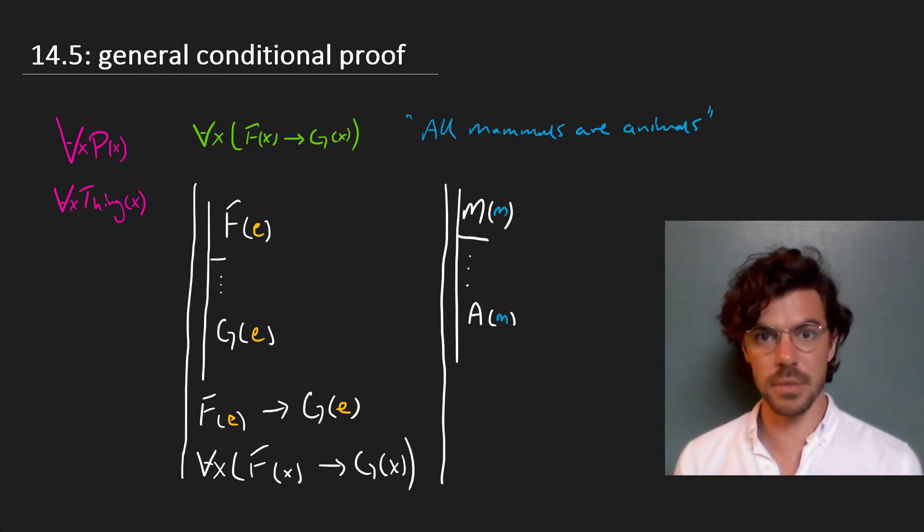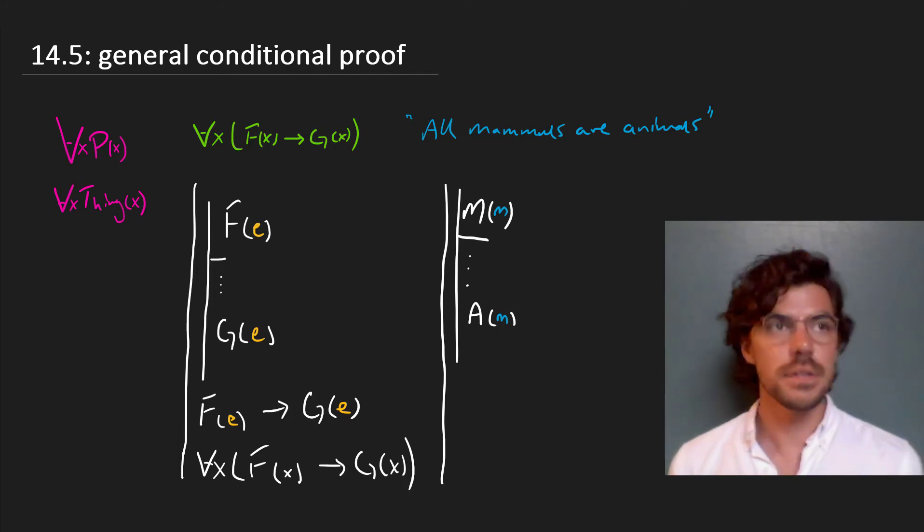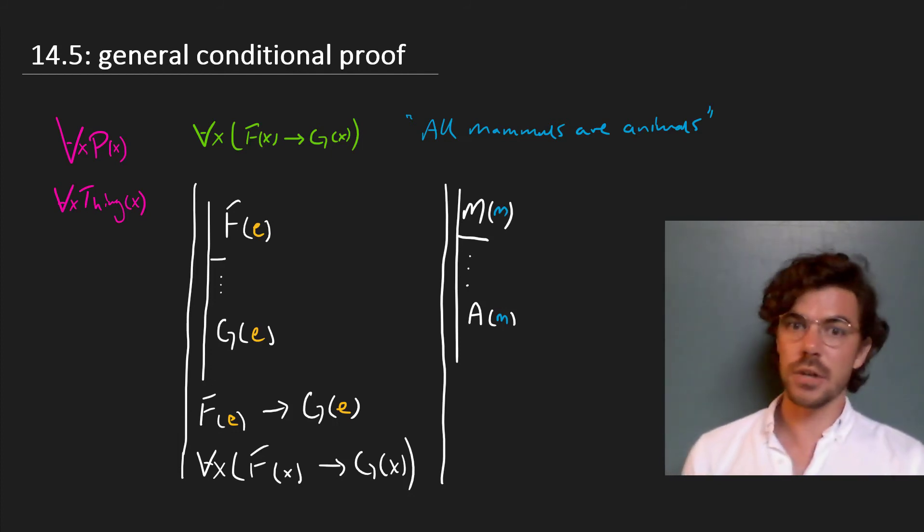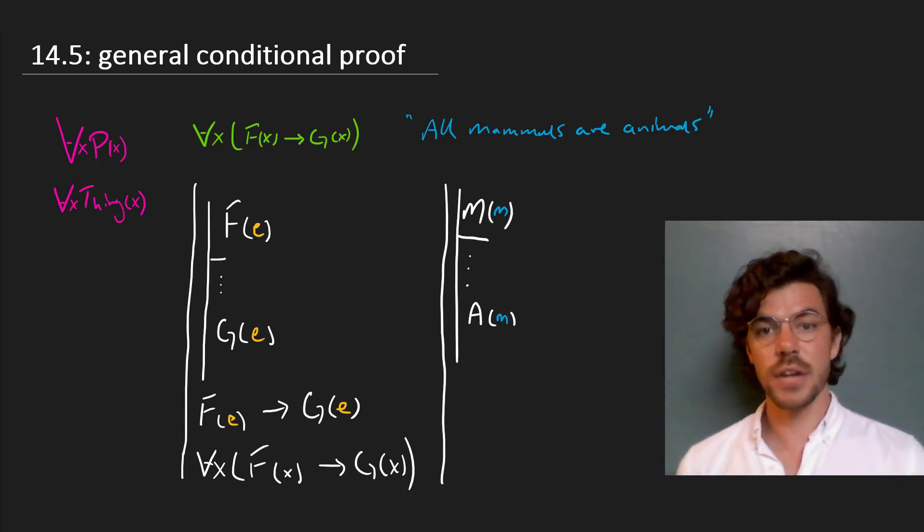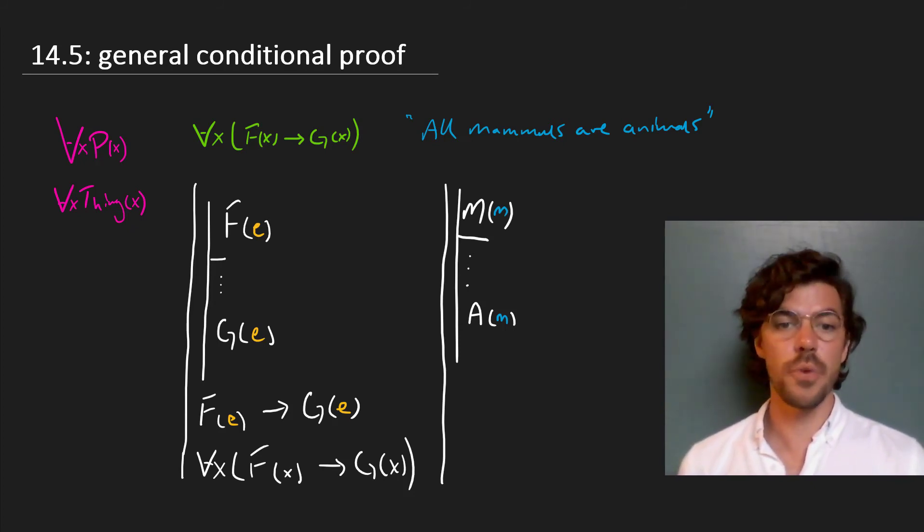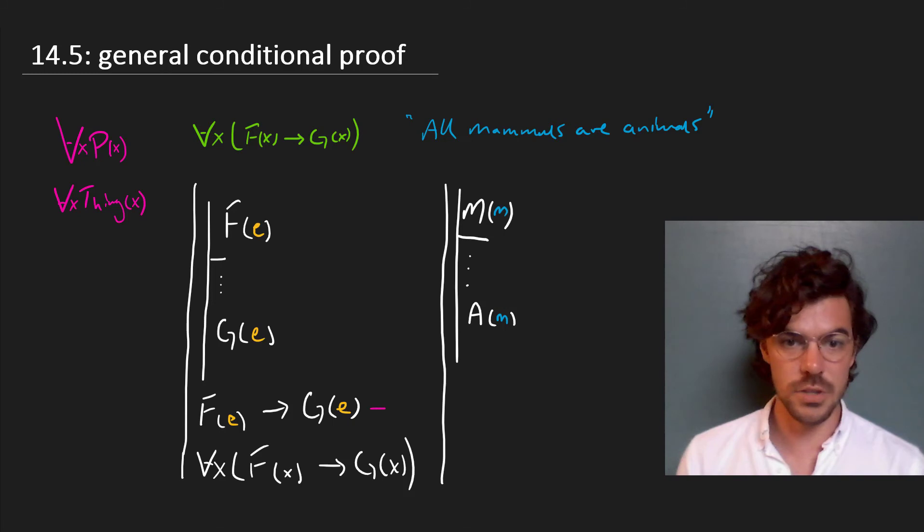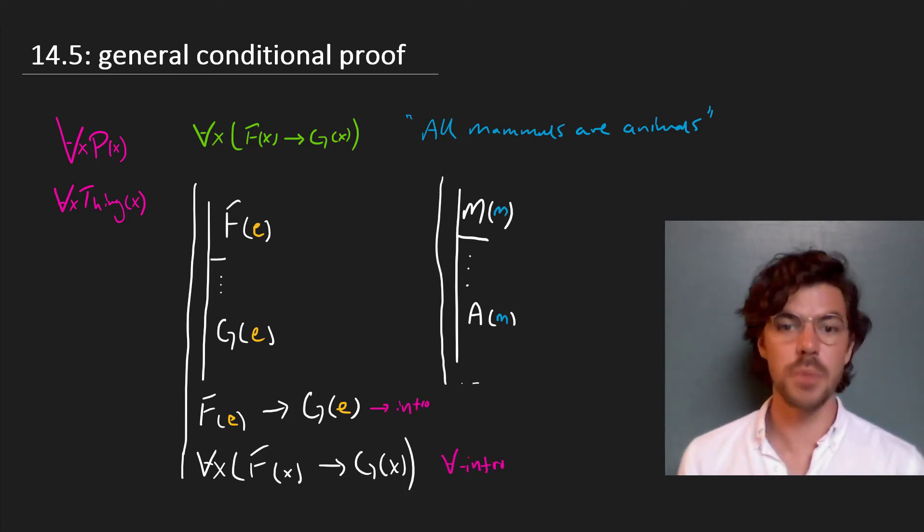And since we aren't speaking about any mammal in particular, we can conclude generally that all mammals are animals. This kind of proof is very common in mathematical reasoning. And that's precisely why it exists as a part of FOL. But it's worth noticing that we don't actually have a special rule for general conditional proof, since to return to our original derivation, this line here near the bottom is just conditional introduction. And this bottom line here is just universal introduction. That's the basic idea.